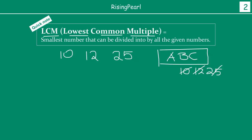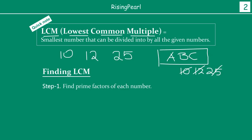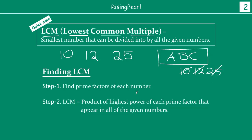So how do we use prime factorization to find LCM? The first step is to find the prime factors for each of the numbers — 10, 12, and 25. Then we multiply the highest power of each prime factor that appears in all of the given numbers. If we find that product, that product is going to be the LCM.